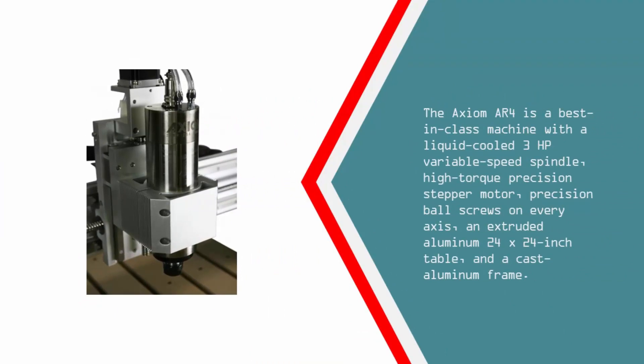The Axiom AR4 is a best-in-class machine with a liquid-cooled 3hp variable speed spindle, high-torque precision stepper motor, precision ball screws on every axis, an extruded aluminum 24 x 24-inch table, and a cast aluminum frame.